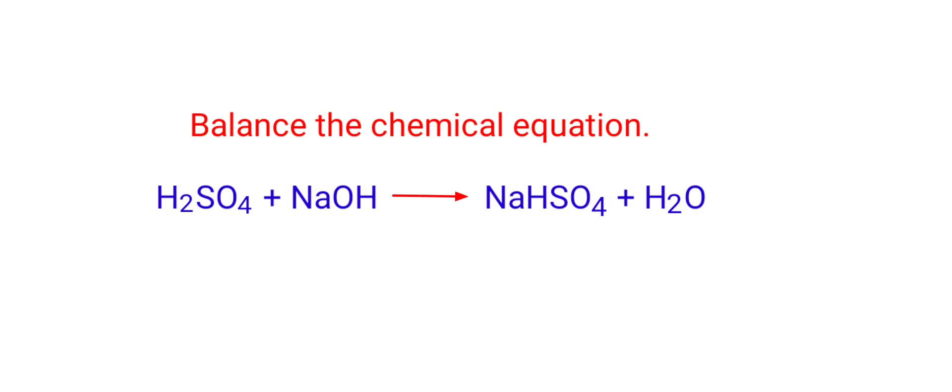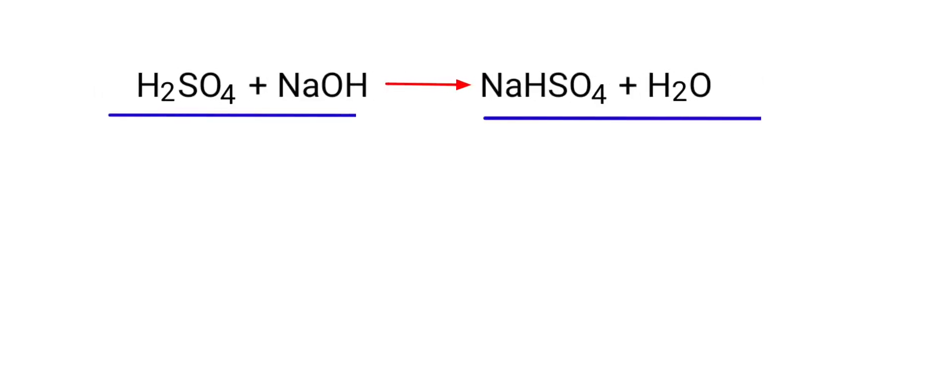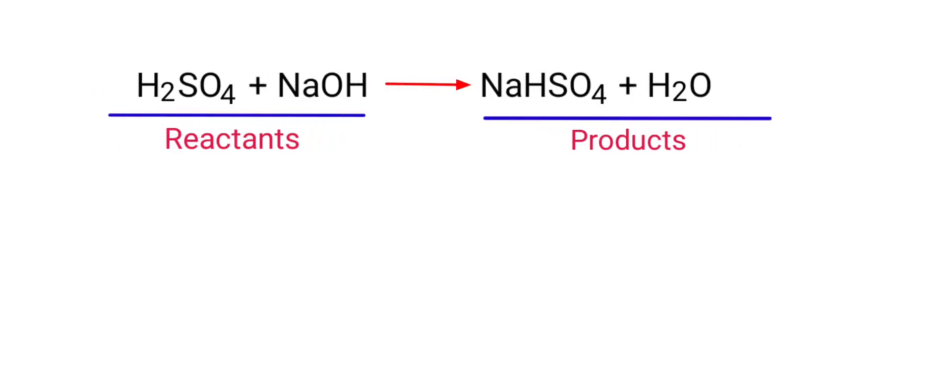Balance the Chemical Equation: Sulfuric Acid plus Sodium Hydroxide gives us Sodium Hydrogen Sulphate plus Water. In this equation, the reactants are Sulfuric Acid and Sodium Hydroxide, and the products are Sodium Hydrogen Sulphate and Water.